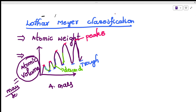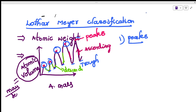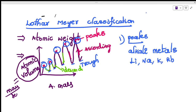The graph mainly shows four parts: peaks, troughs, ascending, and descending. The first part — the peaks — contains only alkali metals: lithium, sodium, potassium, rubidium, cesium, and francium. Alkali metals are basic in nature and water-soluble, which is why they are called alkali metals.